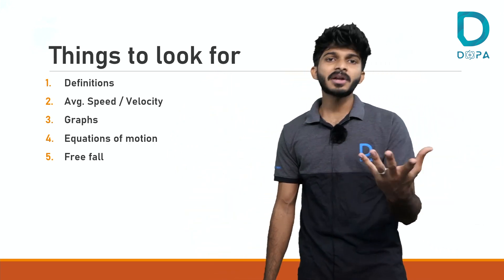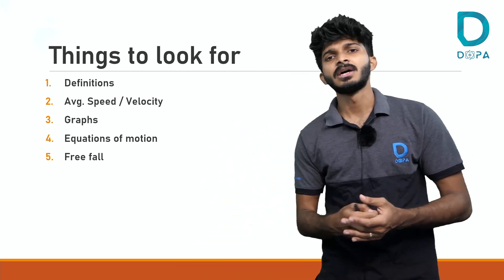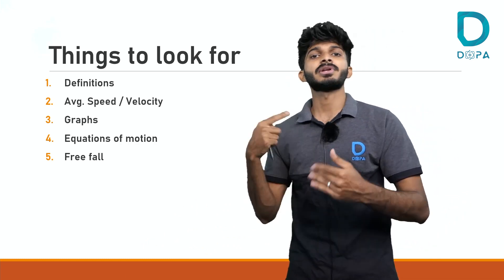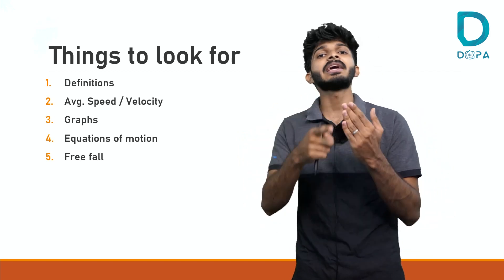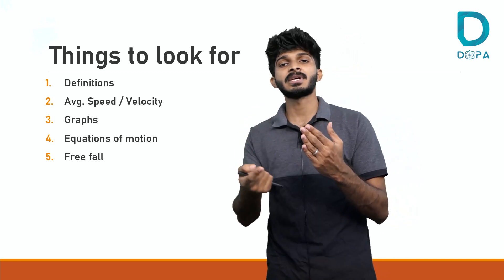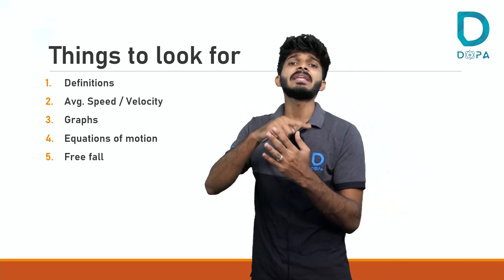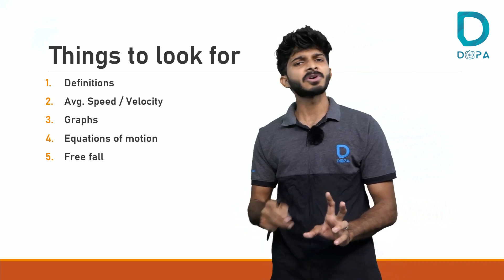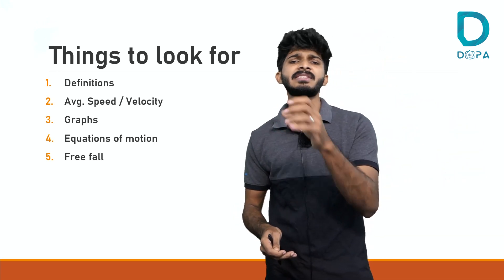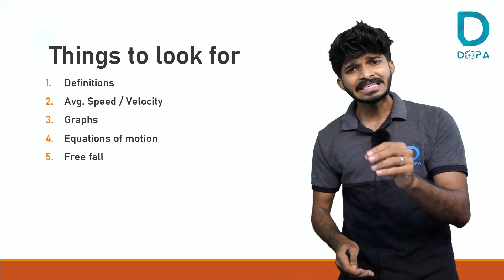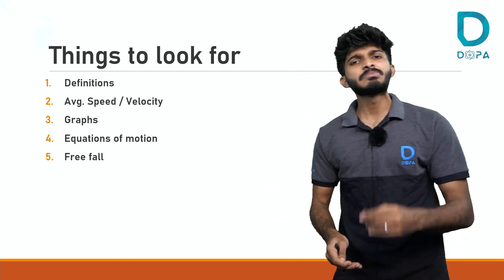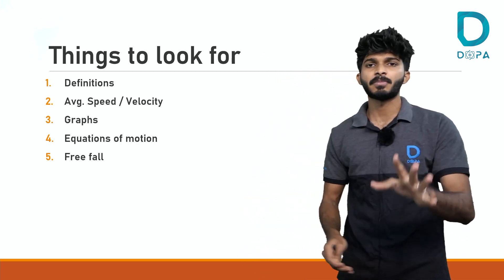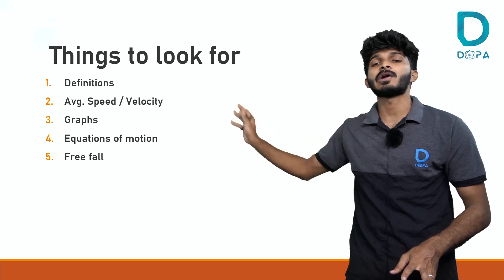The first entity is definitions. You have been studying these since secondary education: what is distance, what is displacement, what is velocity, speed, acceleration, uniform motion, uniform acceleration, and the relationships between all these entities — for example, distance is greater than or equal to displacement. This is a simple theory part. Just study that as it is. In NEET papers there will be a lot of easy, simple questions, so they may ask simple definitions. Understand and know the concept of each and every definition.